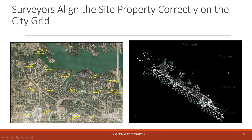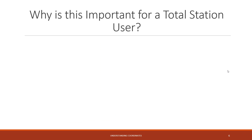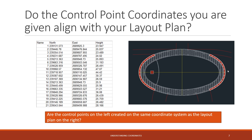Around the property, the surveyor placed a bunch of control points at certain coordinates in relation to the city grid. They're all marked clearly and labeled appropriately for job site contractors, especially the general contractor, to use going forward. Total station users are often not given the civil drawings — sometimes they are — but most of the time you're given a layout plan, which doesn't look nearly as intricate or as detailed or as large as a civil plan.